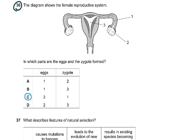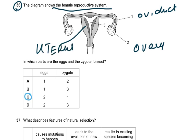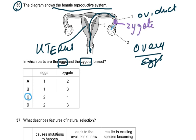Question 36. The diagram shows the female reproductive system. One is the oviduct, two is the ovary, three is the uterus or uterine cavity. In which parts are the eggs and zygote formed? Eggs are formed in the ovary. The ovum is released, sperms deposited here travel here, and fertilization takes place here. When fertilization takes place, the zygote is formed. The zygote forms in the outer one-third of the oviduct. Eggs would be in the ovary which is two, and the zygote in the oviduct which was one.